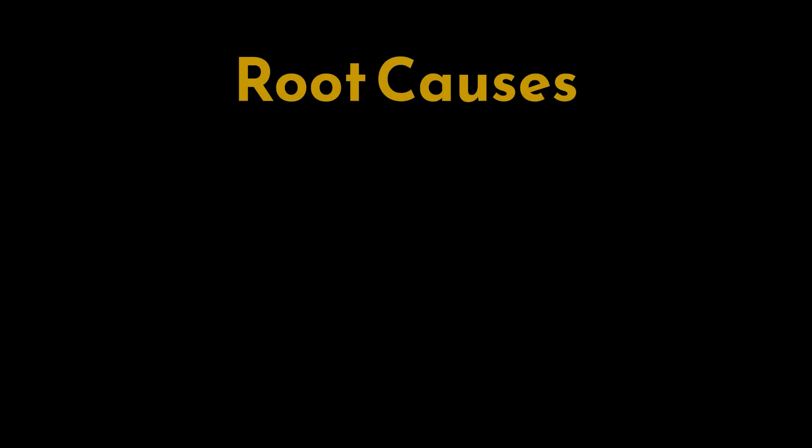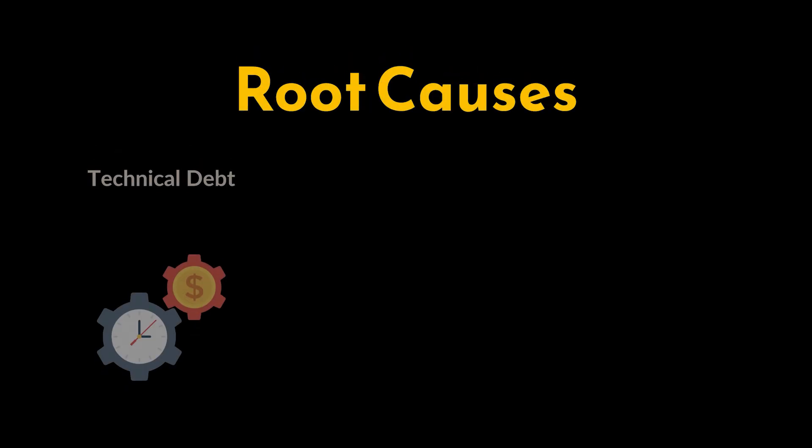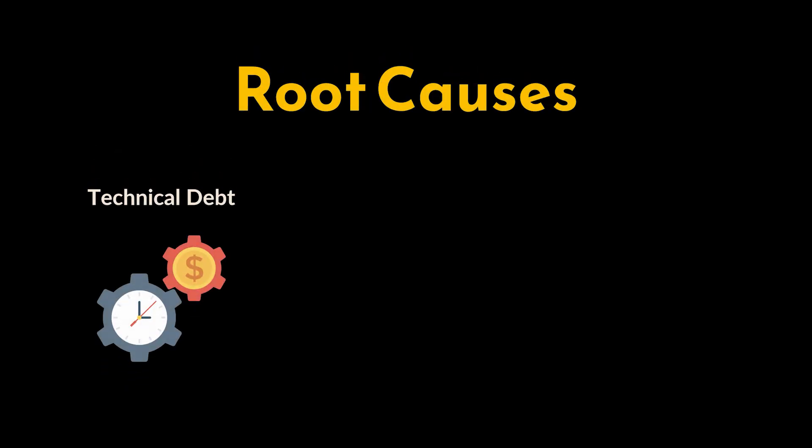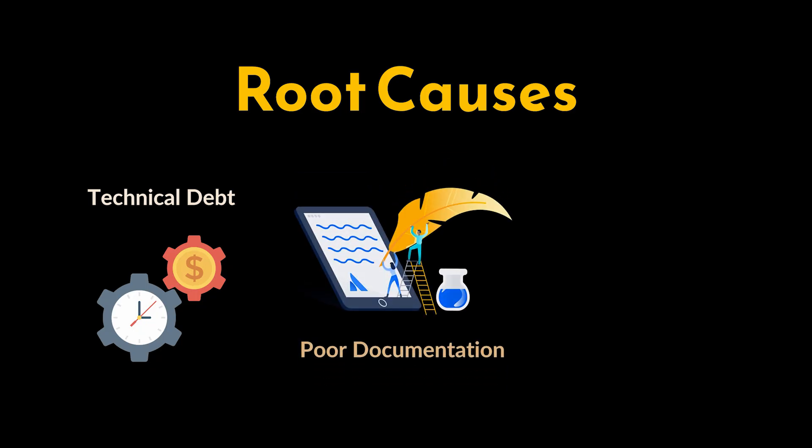Let's explore the root causes behind this pattern. First, technical debt: over time, quick fixes and suboptimal design choices accumulate, leading to a fragile code base. Technical debt can result from shortcuts taken to meet deadlines, lack of refactoring, or ignoring best practices. This pattern can also be caused by lack of or poor documentation — inadequate or missing documentation makes it challenging for developers to understand the system.